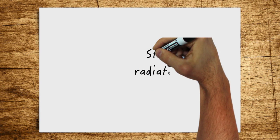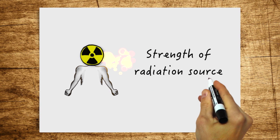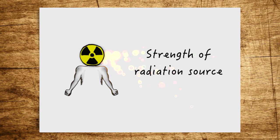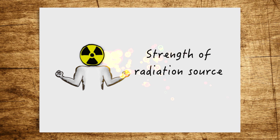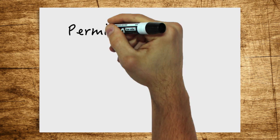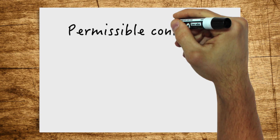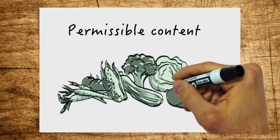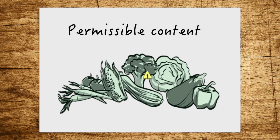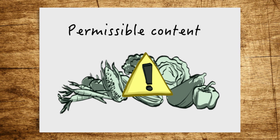But what do we need this unit for? For instance, how strong radiation sources are that are used for medical or industrial applications can be expressed in units of Becquerel. Values in Becquerel are also used for limits, for instance for the permissible content of certain radioactive substances in food.